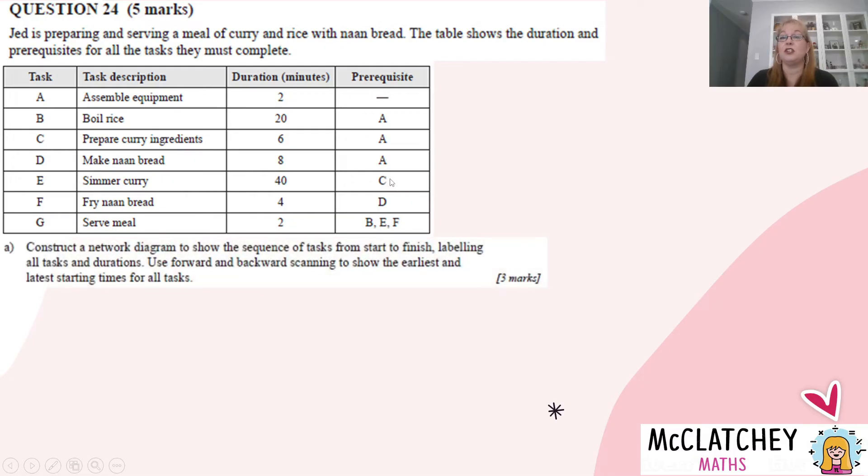So what the task is asking us to do is to construct a network diagram to show the sequence of the tasks from start to finish with labeling all the tasks and durations, and then we need to use forward and backwards scanning to show the earliest and latest starting times for all the tasks. So there's actually quite a bit of work involved in these three marks. It's a bit laborious and technical, but not super difficult. Let's get straight into it.